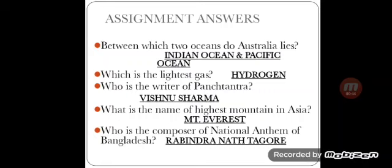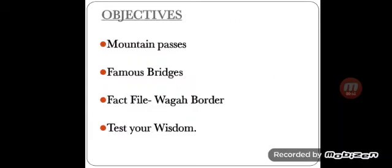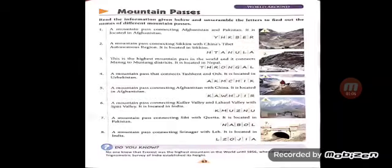We will be doing Unit 3, that is World Around. Today's objectives are: mountain passes, famous bridges, then a fact file about the Wagah Border, and then Test Your Wisdom. Let's begin with the mountain passes.